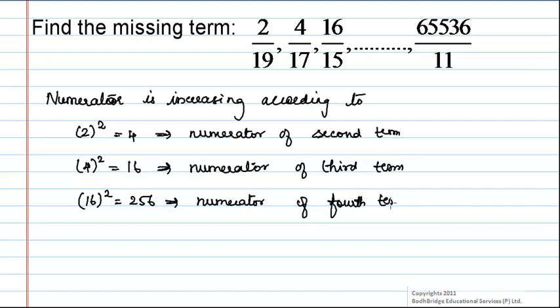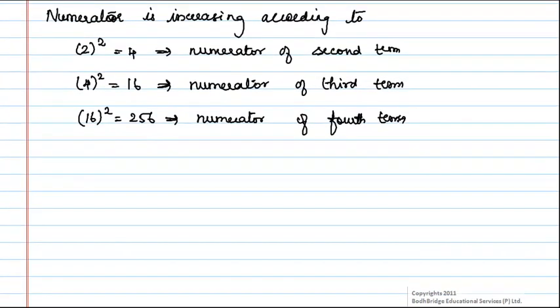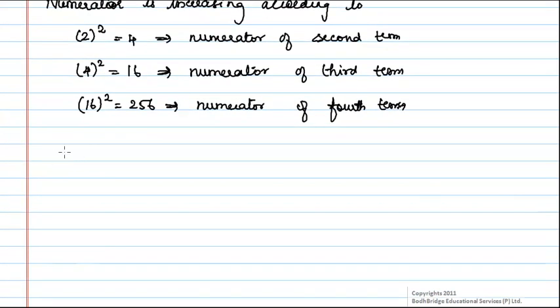Now, we have to find the denominator of the fourth term. By observing the given terms, we can say that denominator is decreasing by 2 in each next term.